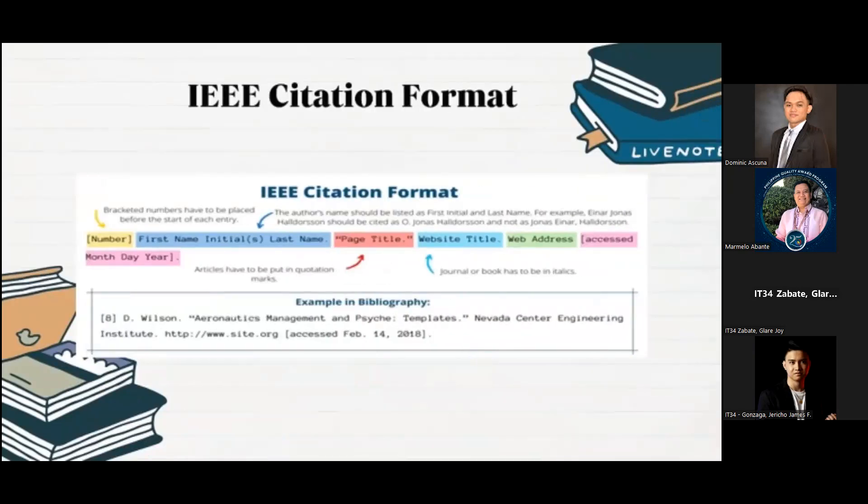Lastly is the IEEE citation format, which focuses on the structure and content of research papers. First, you need to indicate the number, which is bracketed numbers have to be placed before the start of each entry. Then the name of the author, which should be listed as first initial and last name of the author. After that is the page title, which is the article that has to be put in quotation marks. After the page title is the website title, typically a journal or book title that needs to be in italics. Then the website address, then last is the access date, which is formatted as month, day, and year.